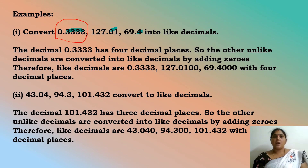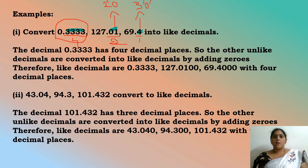Since the largest is four decimal places, we add two zeros to 127.01 to get 127.0100, and three zeros to 69.4 to get 69.4000. Therefore, the like decimals are 0.3333, 127.0100, and 69.4000, all with four decimal places. These are now all like decimals.